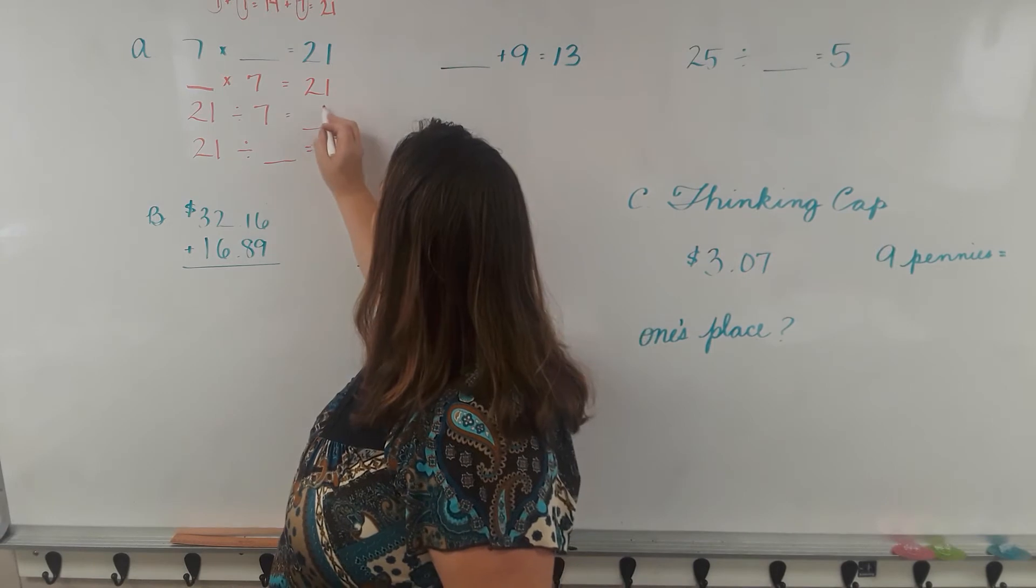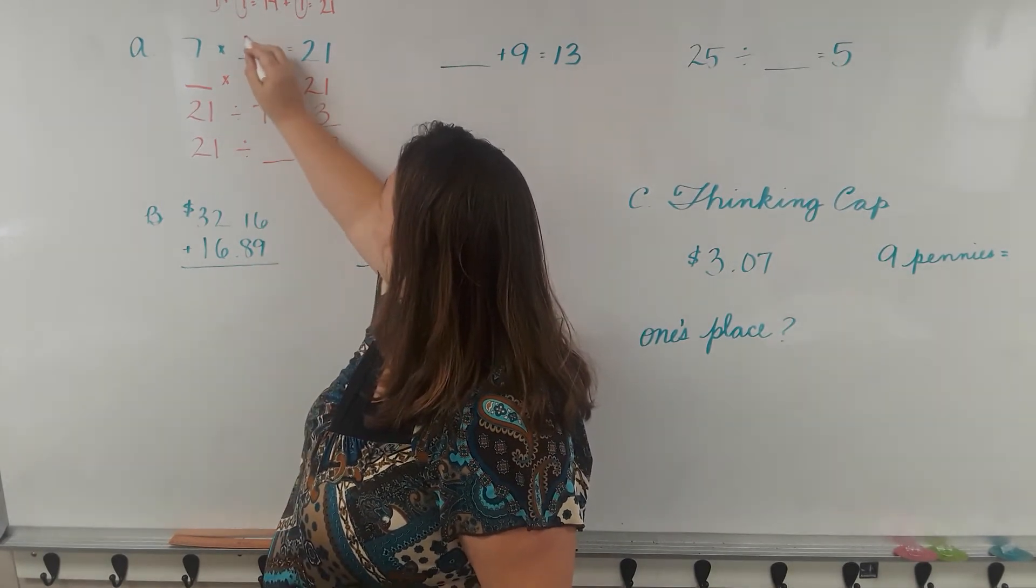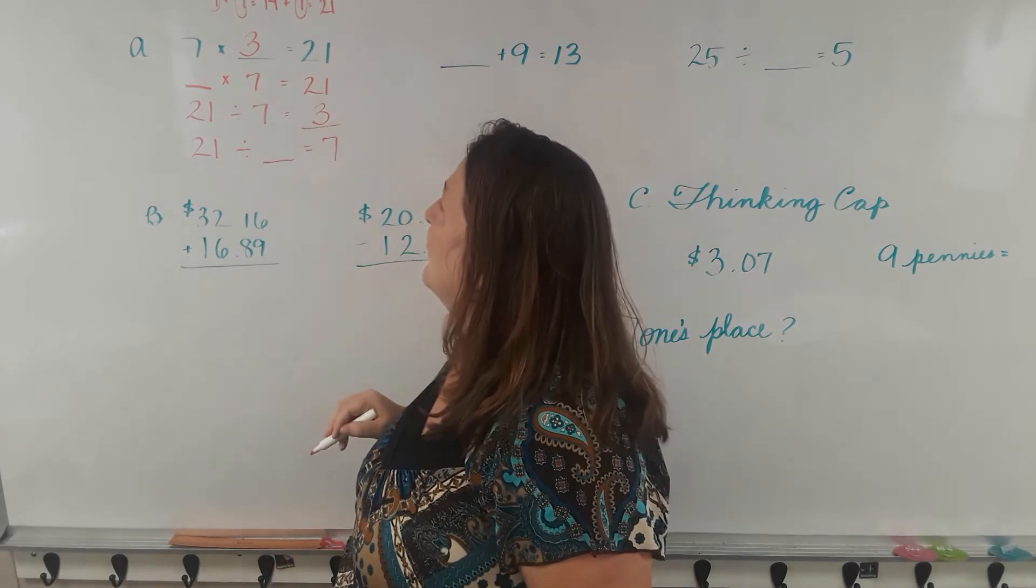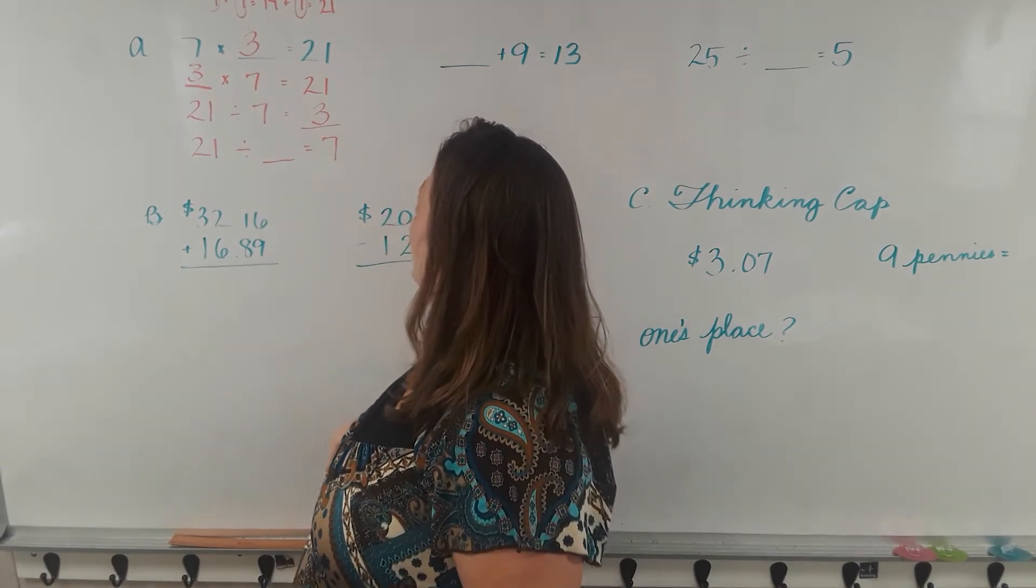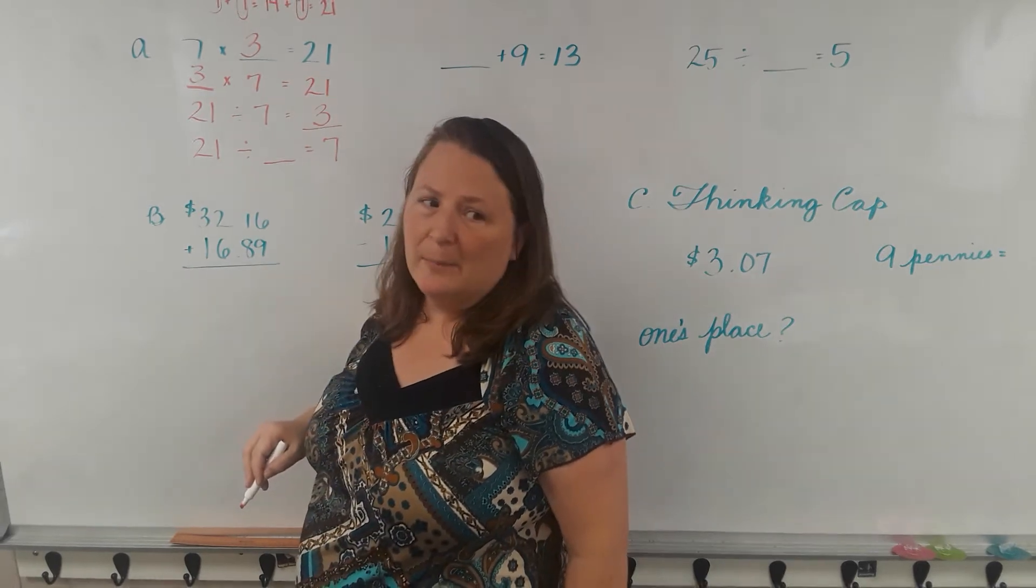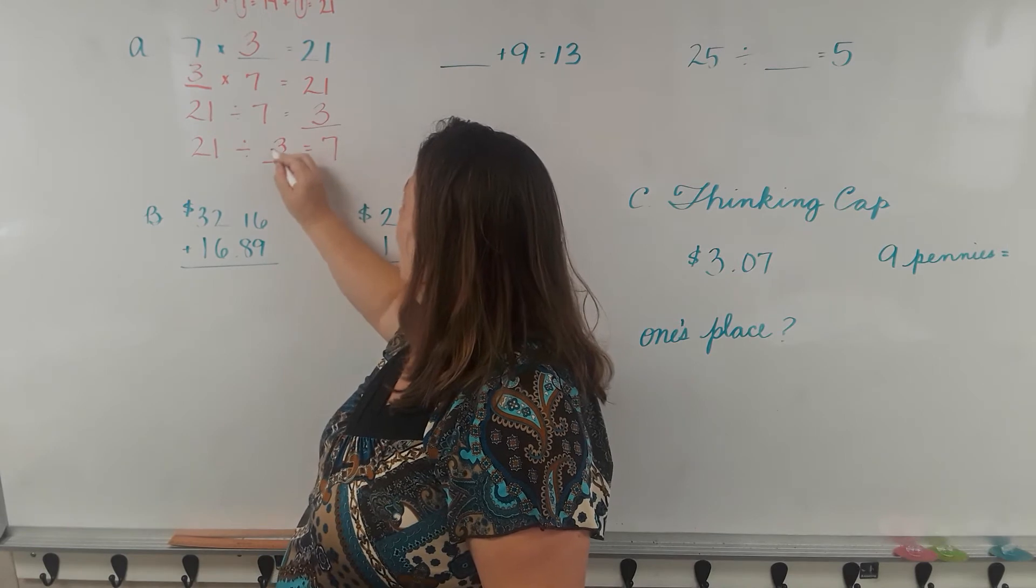So 21 divided by 7 equals 3. So 3 is our missing factor. 7 times 3 equals 21, 3 times 7 equals 21, 21 divided by 7 equals 3, 21 divided by 3 equals 7.